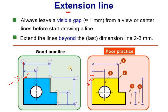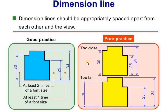Now, what is the gap? It should not be touching the object. The visible gap should be around 1 mm — it should not be less than that, but it should not be zero either. The extension line must not touch the object outline; this is good practice. There are practices we should do and practices we should not do.